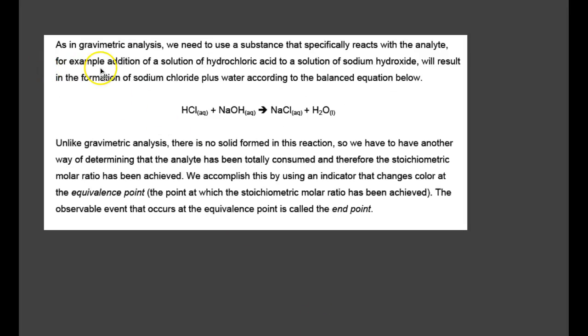As in gravimetric analysis, we need to use a substance that specifically reacts with the analyte. For example, addition of hydrochloric acid to sodium hydroxide will result in the formation of sodium chloride plus water, according to the equation. Unlike gravimetric analysis, there is no solid formed in this reaction. We have to use another way of determining the analyte has been consumed, and therefore the stoichiometric molar ratio has been achieved. We accomplish this by using an indicator that changes color at the equivalence point, the point at which the stoichiometric molar ratio has been achieved. The observable event that occurs at the equivalence point is called the end point.